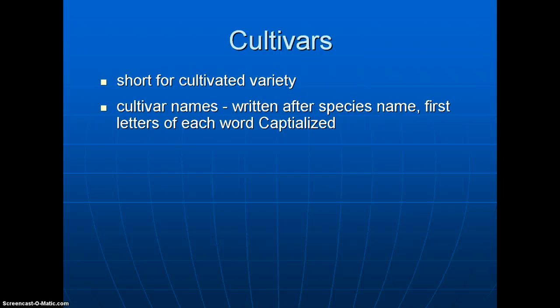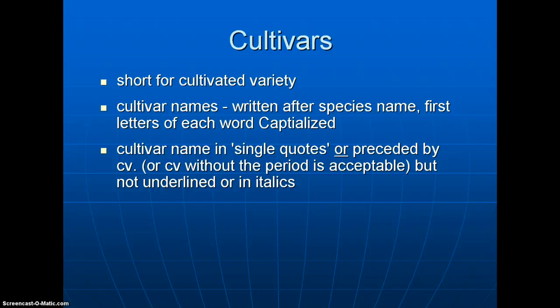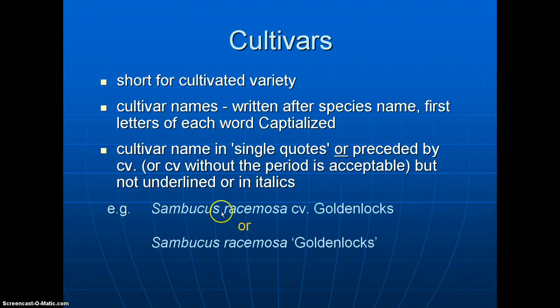Cultivars are developed by horticulturists through breeding or selection — the name is short for 'cultivated variety.' The cultivar name is written after the genus and specific epithet, with the first letter of each word capitalized. It is placed in either single quotes or preceded by the abbreviation cv. You do not underline or italicize the cultivar name. For example: Sambucus racemosa cv. Golden Locks, or Sambucus racemosa 'Golden Locks'. Pick one system and stick with it — don't mix them in the same document.